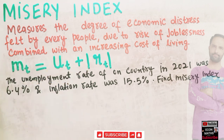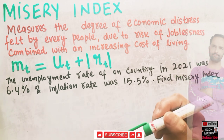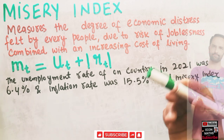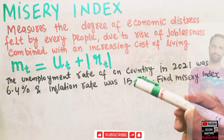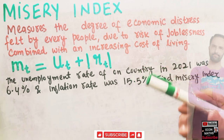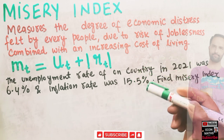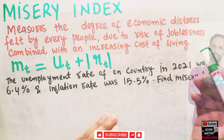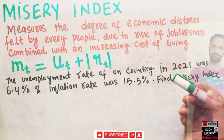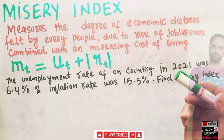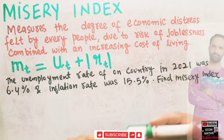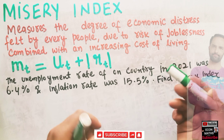This misery index was first created by Arthur Okun, whose work we also study in Okun's Law. It was created during the 1970s. The key idea is that the higher the misery index, the greater the suffering or misery that the average citizen of a country experiences.